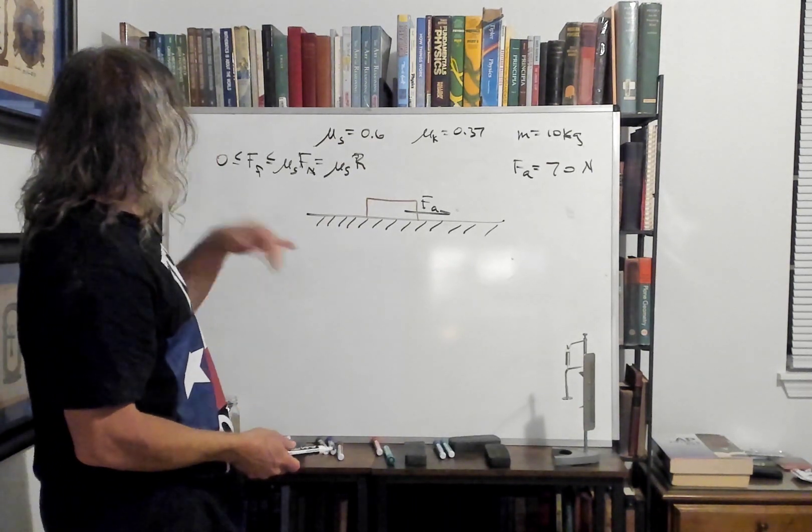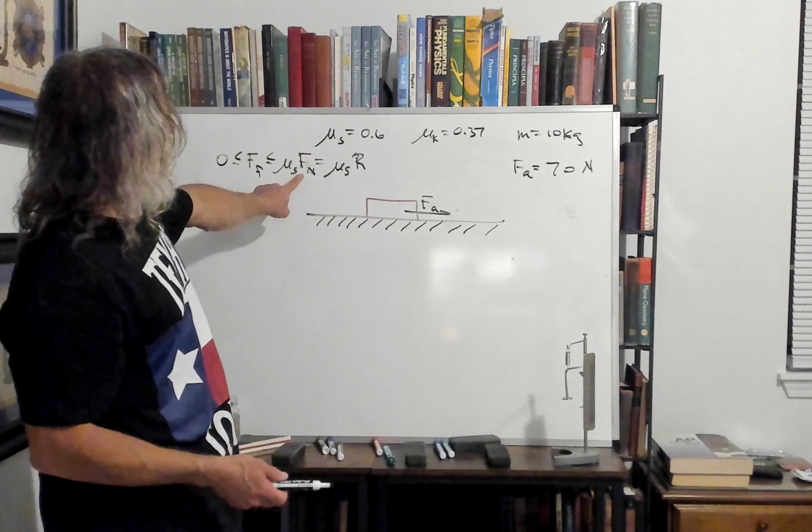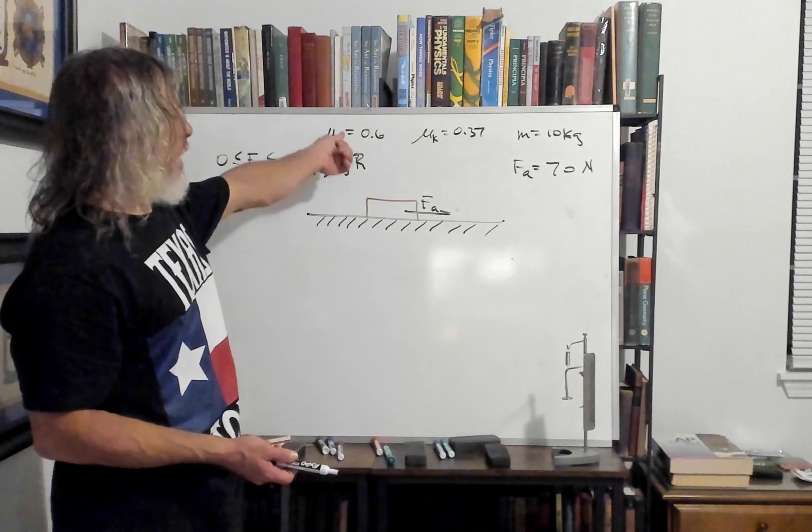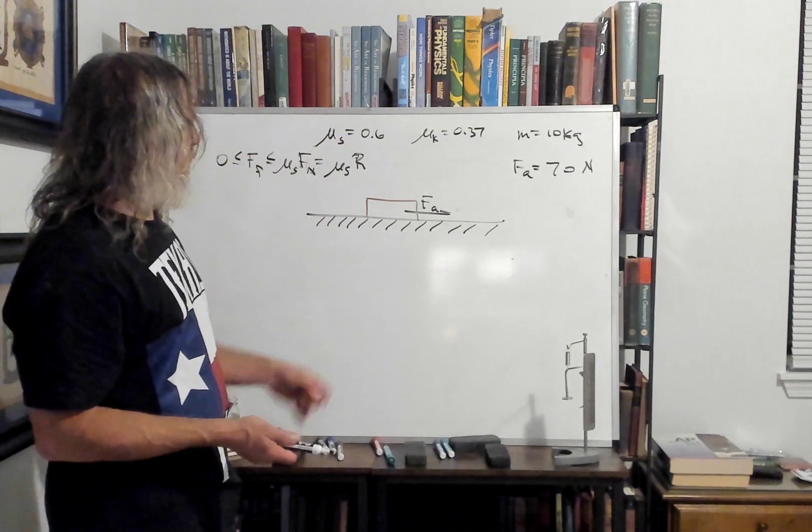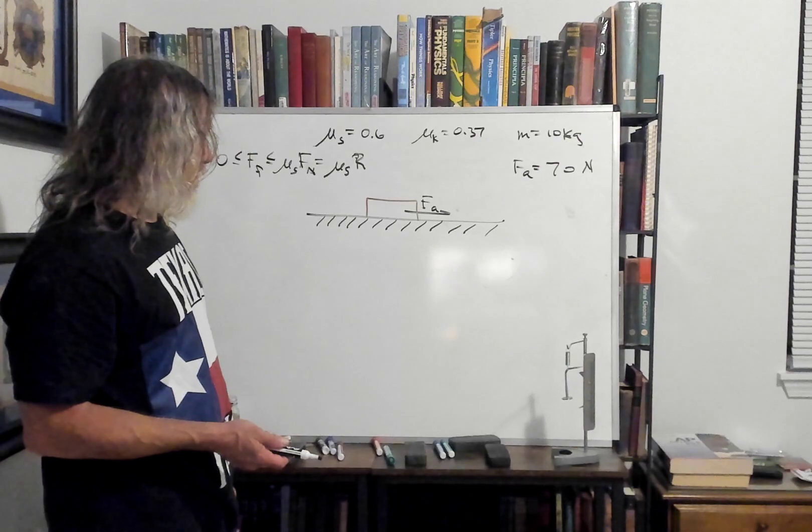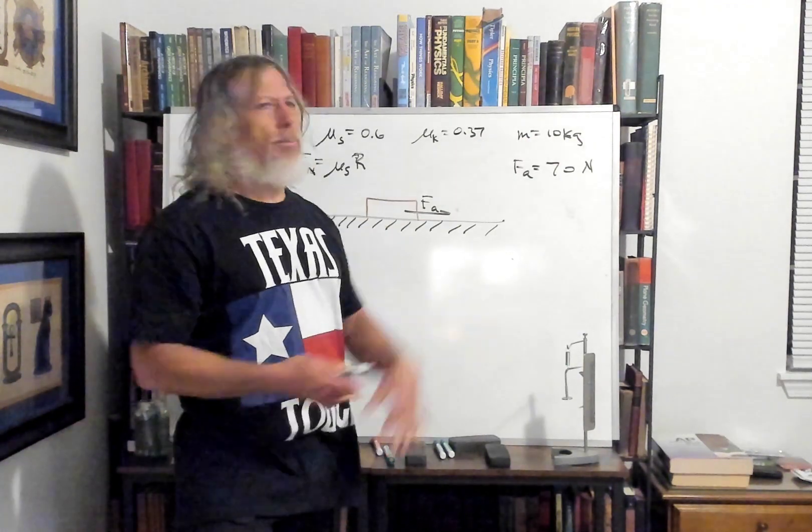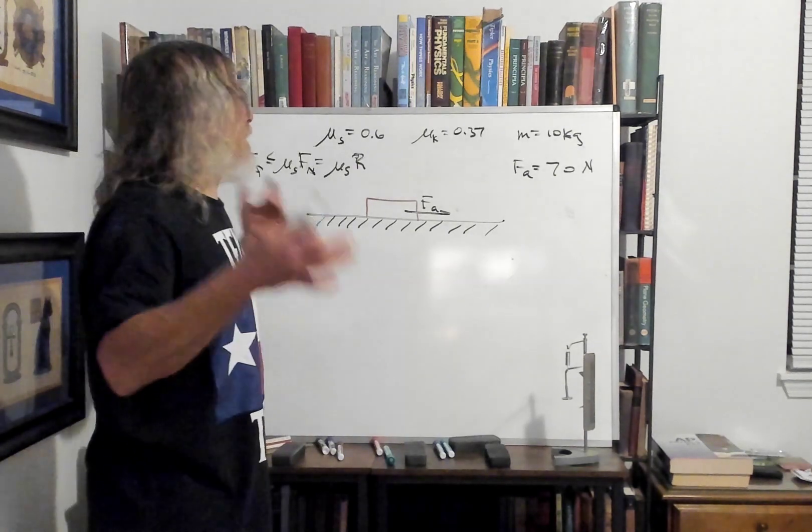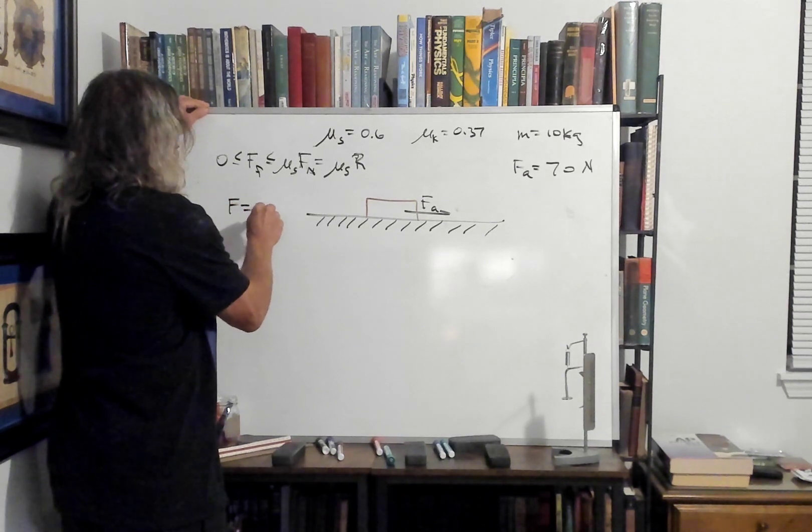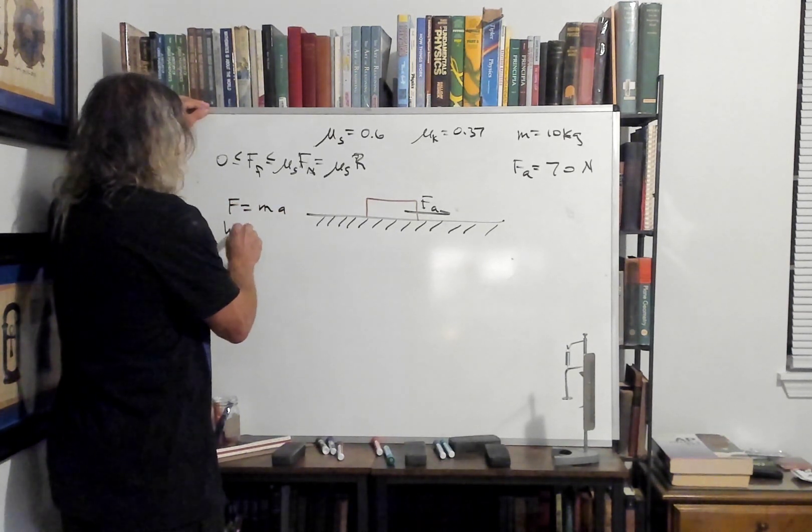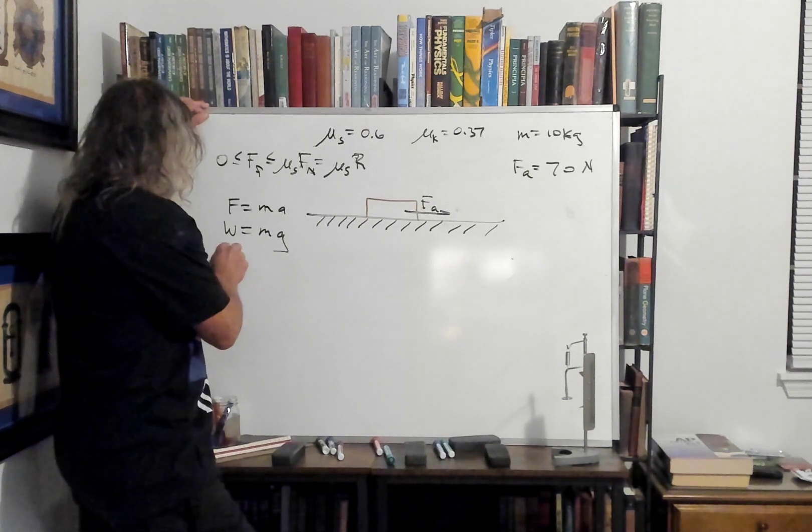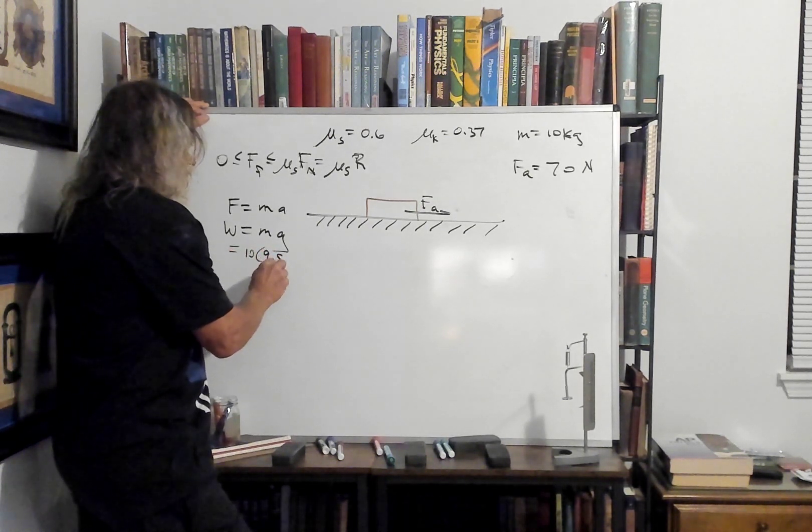Now, force of friction will be between zero and this, six-tenths of the normal force. And the normal force is its weight, because nothing's pulling it up to lessen the normal force. So the ground has to support all the weight. So we need to see what the weight is. Remember, kilograms is mass. It's not a weight. Weight is force newtons. So we get this. We do F equals MA for weight. Weight is mass times acceleration due to gravity. It's an example of that.